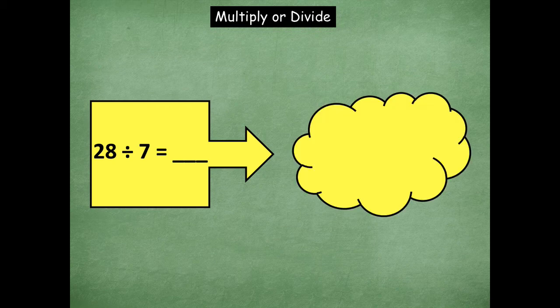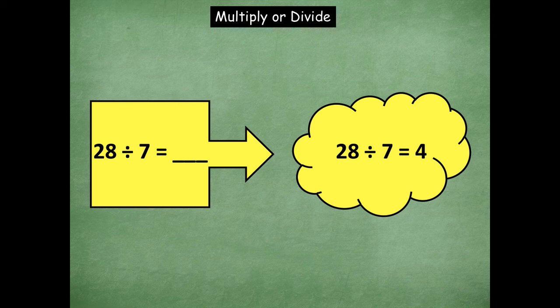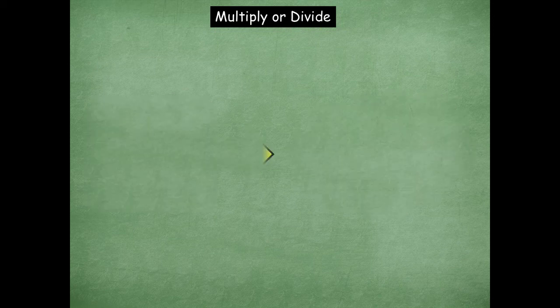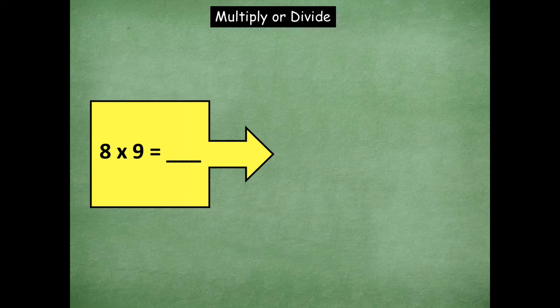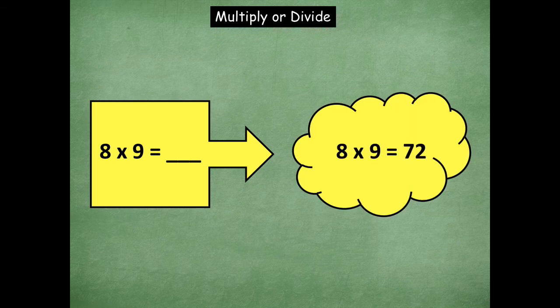Okay. So 28 divided by 7 equals 4. 8 times 9 is 72. Okay, you can skip count with this as well.